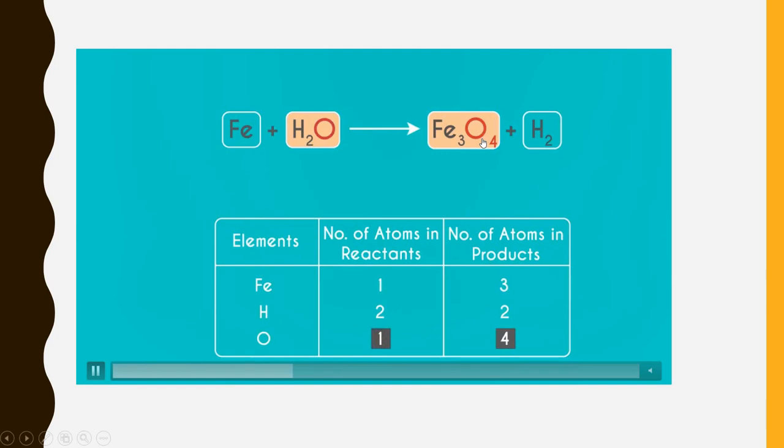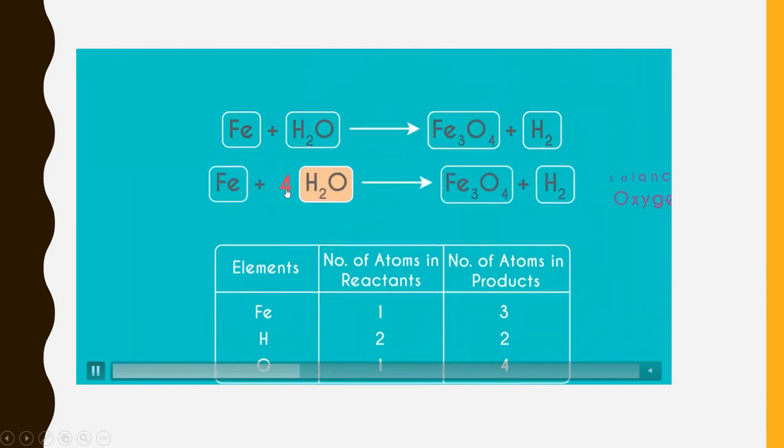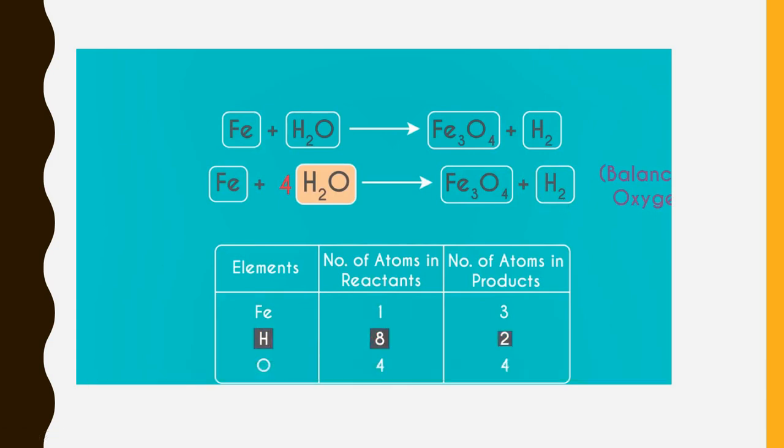Here towards product side it is 4, towards reactant side it is 1. So we are going to add a coefficient of 4 towards reactant side. Now we see that oxygen is balanced. But at the same time hydrogen if you see it is not balanced because hydrogen is now 8. Whereas this side it is only 2. So our third step will be to balance hydrogen.